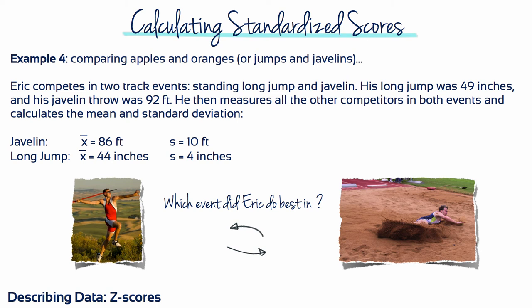Example 4: Eric competes in two track events, standing long jump and javelin. His long jump was 49 inches and his javelin throw was 92 feet. He then measures all the competitors in both events and calculates the mean and standard deviation. The javelin competitors hit a mean of 86 feet and a standard deviation of 10, while the long jump competitors hit a mean of 44 inches and a standard deviation of 4.